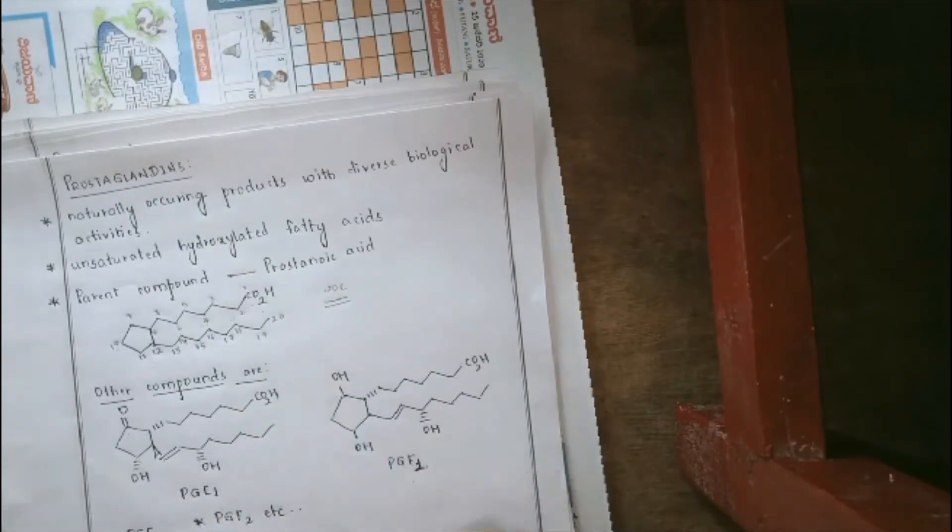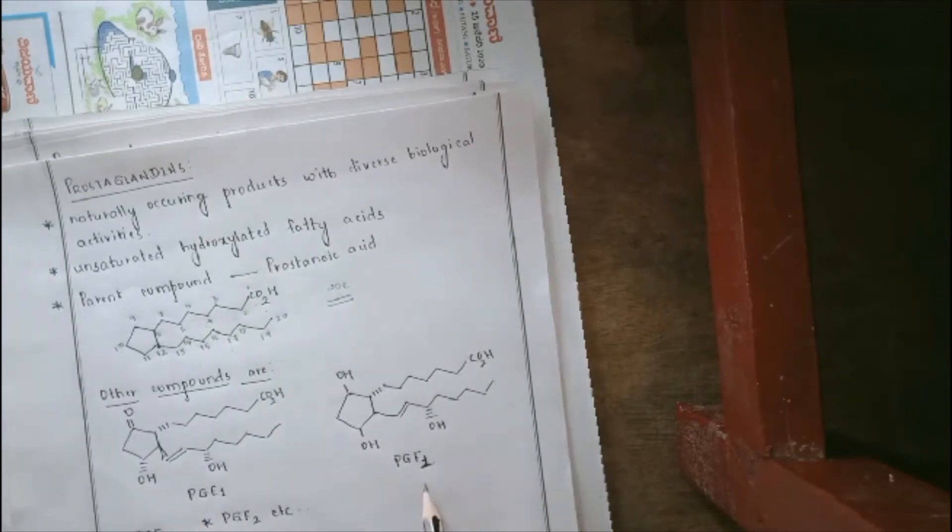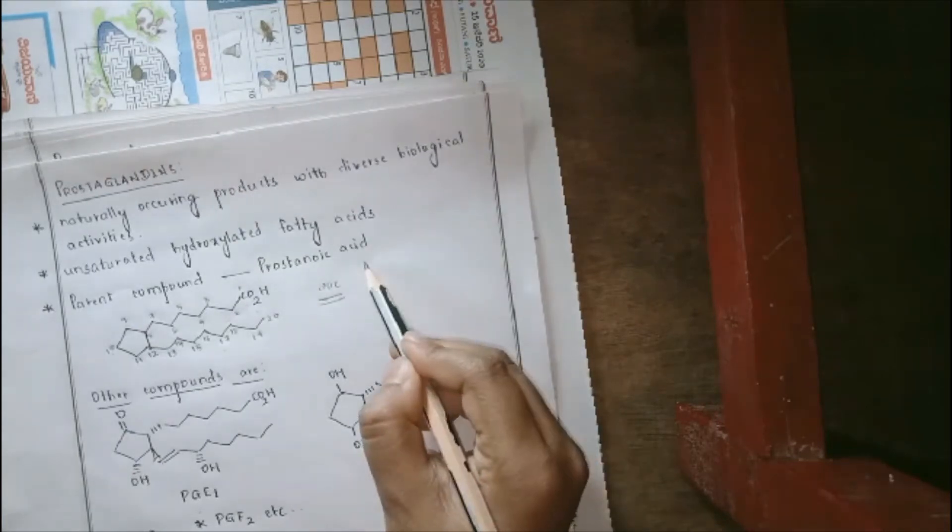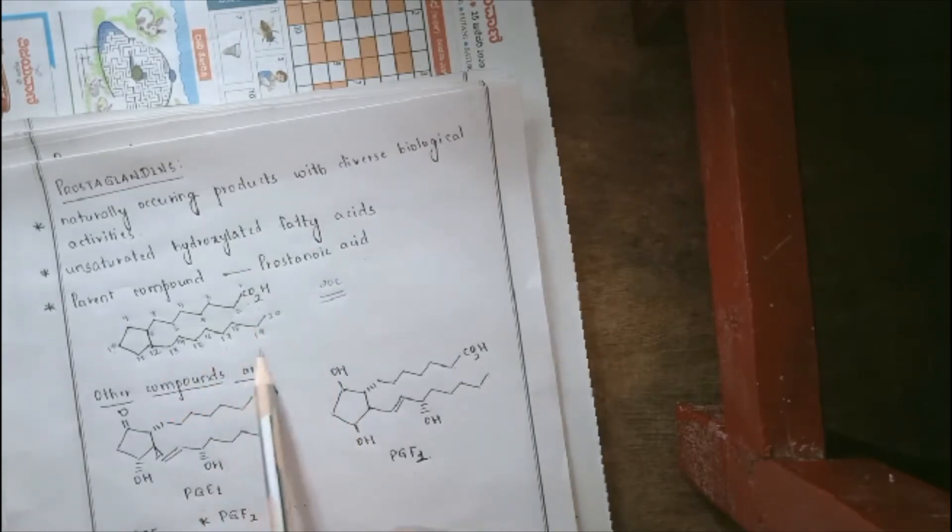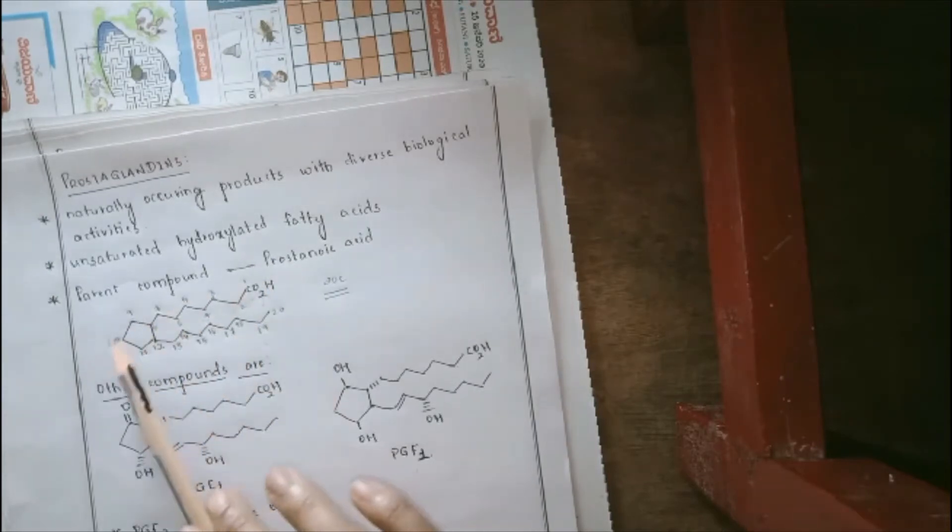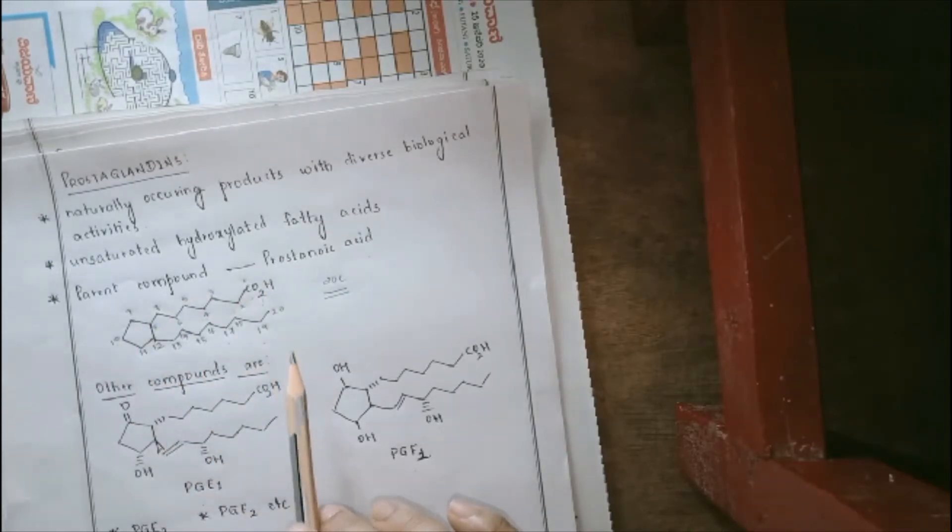So, when we speak about the other prostaglandins, they can be PGE1, PGF1. So, what is the difference between this prostanoic acid and PGE1, PGF1? In the prostanoic acid, we saw that there is long-term fatty acid, presence of a carboxylic group. There was no other presence of any other functional group.